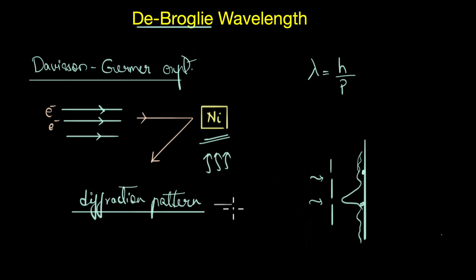Now this clearly demonstrated the wave-like behavior of electrons. And this was something that had never been observed before with a particle. Now this directly confirmed de Broglie's prediction that particles like electrons can behave like waves.